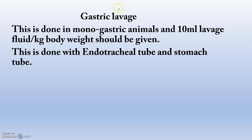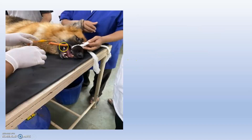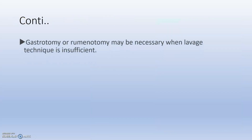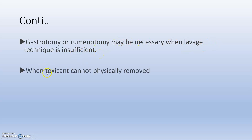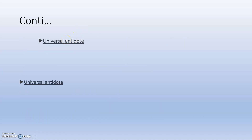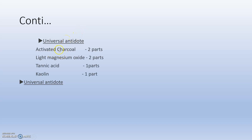Gastric lavage is done mainly in monogastric animals using 10 ml of lavage fluid per kilogram body weight, performed with an endotracheal tube and stomach tube. In large animals, insertion of a stomach tube is also of value. When the lavage technique is insufficient in large animals and the toxicant cannot be physically removed, ruminotomy may be necessary. Alternatively, activated charcoal can be used because its absorption potential is very high and it acts as a universal antidote.